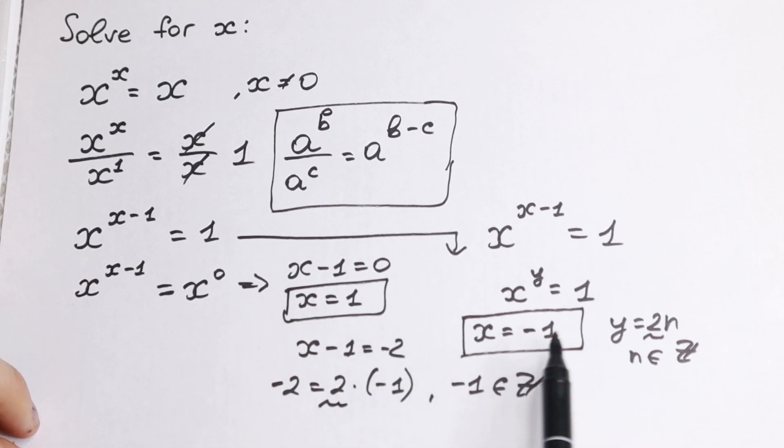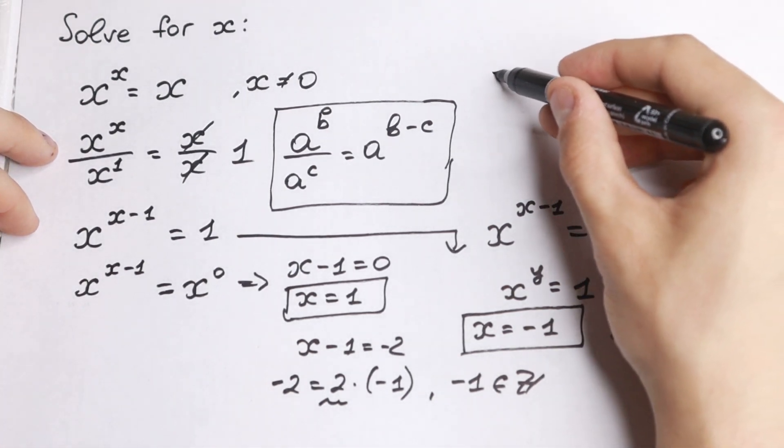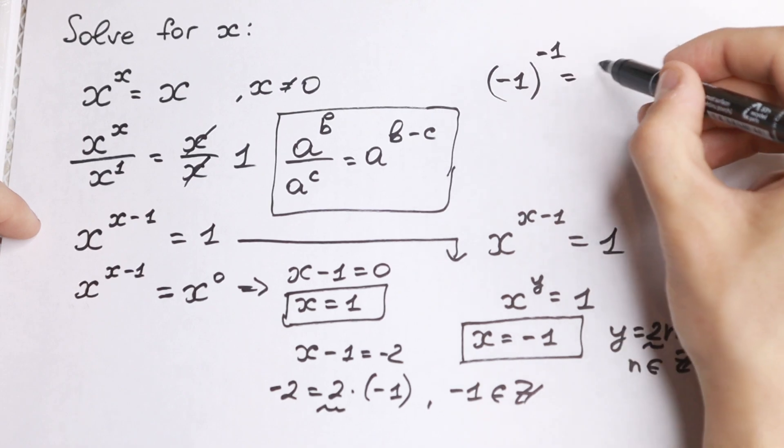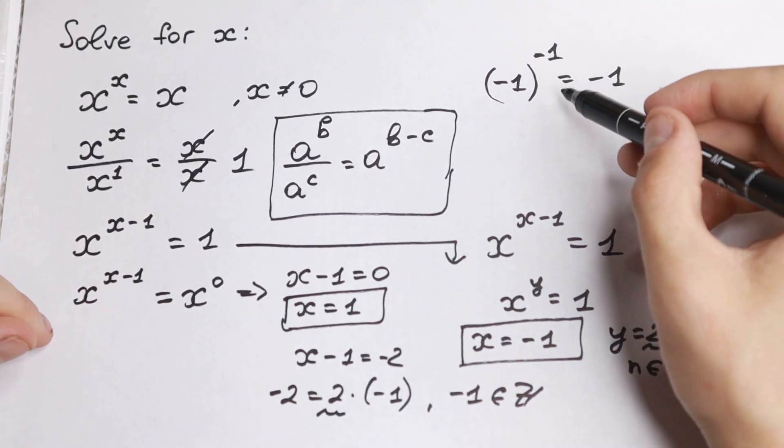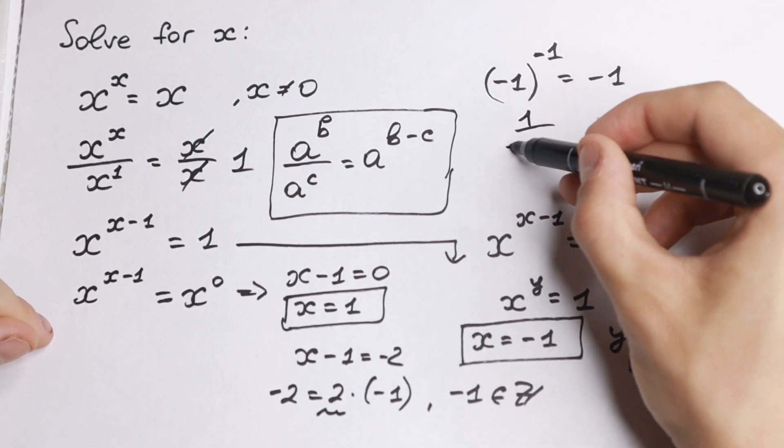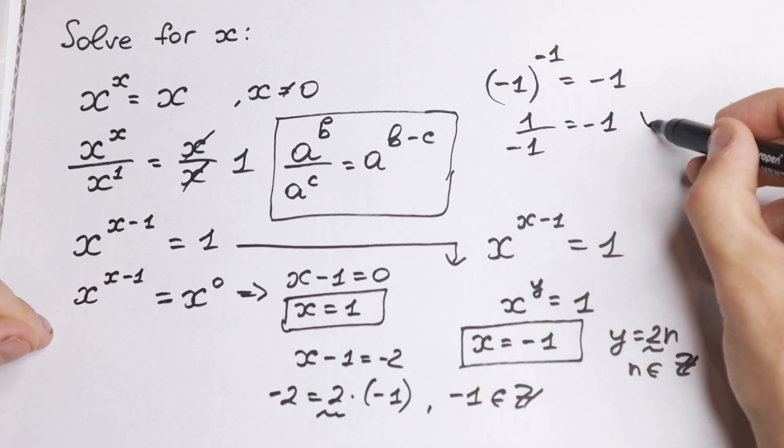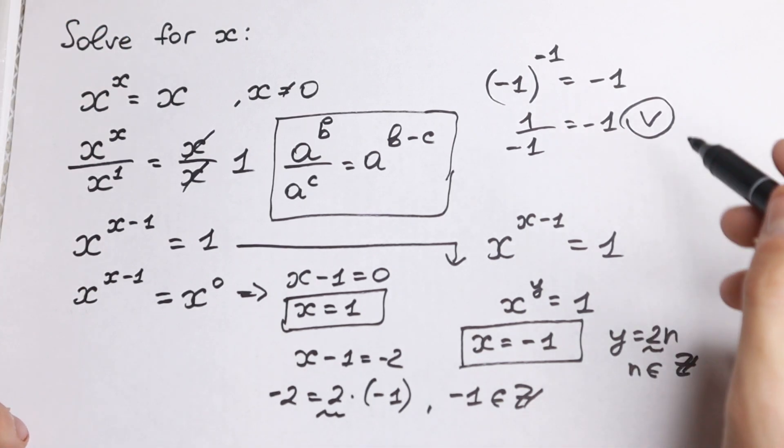So we have two roots 1 and minus 1. And let's check this minus 1 what we will have in the beginning. We will have that minus 1 to the power minus 1 equal to minus 1. Of course, this is absolutely correct because minus 1 to the power minus 1 will be 1 over minus 1. We just bring this in our denominator equal to minus 1, which is absolutely correct. And 1 of course is correct because 1 to the power 1 equal to 1.